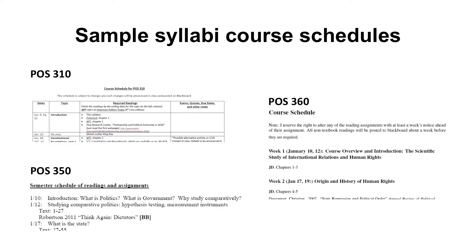You'll also find course schedules, usually at the end of your syllabus. These list by date the topic covered in that class session, the required readings, as well as exams, quizzes, or other things scheduled for those days. POS 310 lists by date, topic, and required readings, and whether there are other things. POS 350 and 360 do the same, just in different formats.